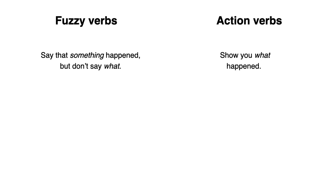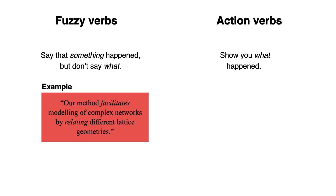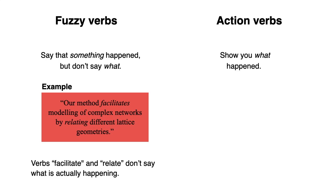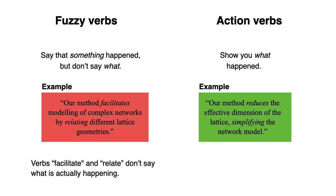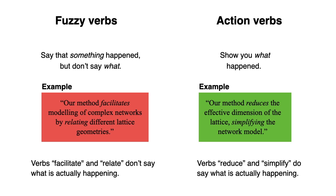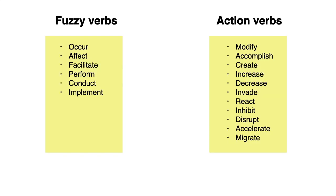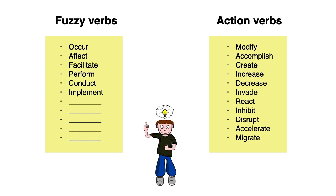Let's look at another example: "Our method facilitates modelling of complex networks by relating different lattice geometries." The words "facilitate" and "relate" don't really say what's happening. We should be more explicit and write: "Our method reduces the effective dimension of the lattice, simplifying the network model." The verbs "reduce" and "simplify" do say what's actually happening. Here are some more examples of fuzzy verbs and action verbs — the ones on the left are vague, while the ones on the right actually tell us what's happening. Can you think of any other fuzzy verbs? Feel free to share your suggestions in the comments below.